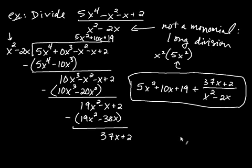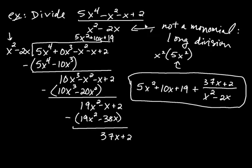So we see that when dividing polynomials there are two cases. When the denominator is not a monomial — that is, when there's more than one term — you have to use long division. Until next time, thank you.